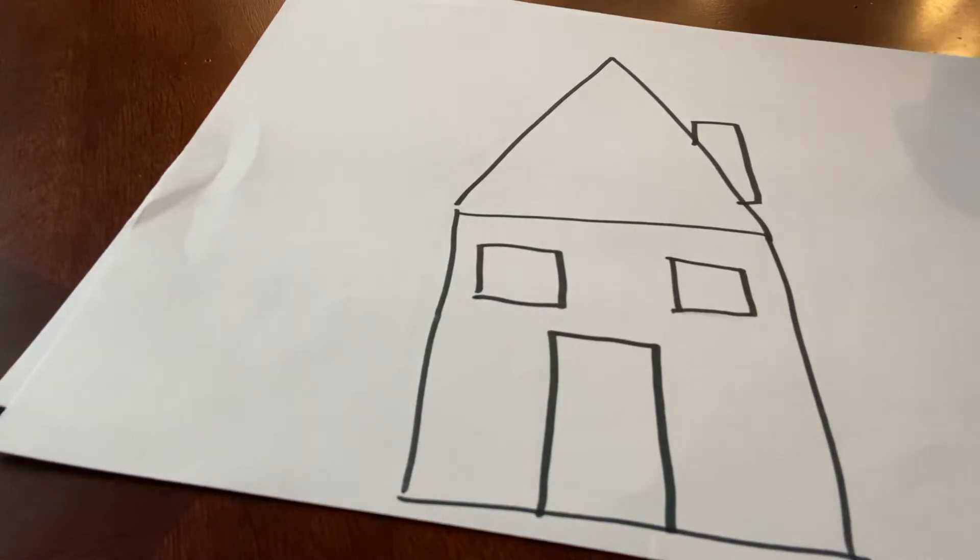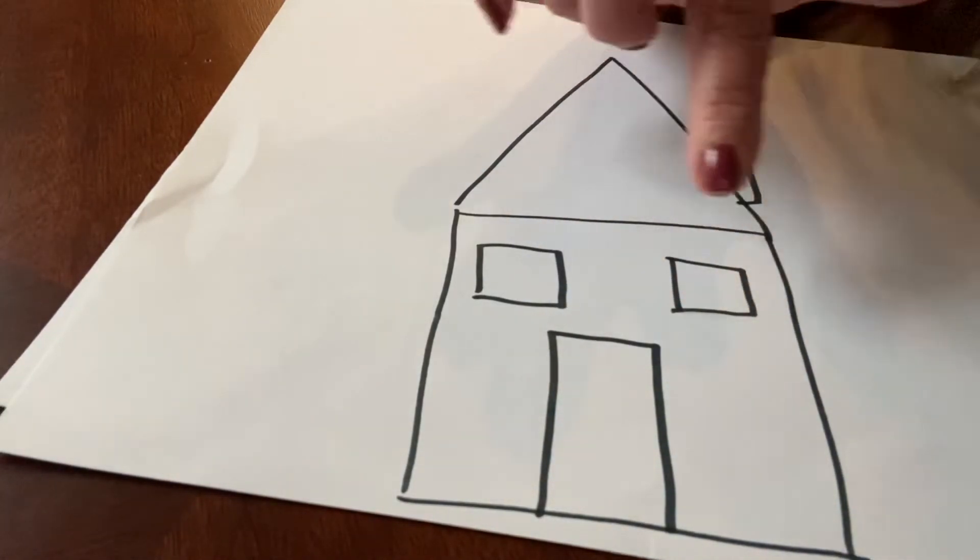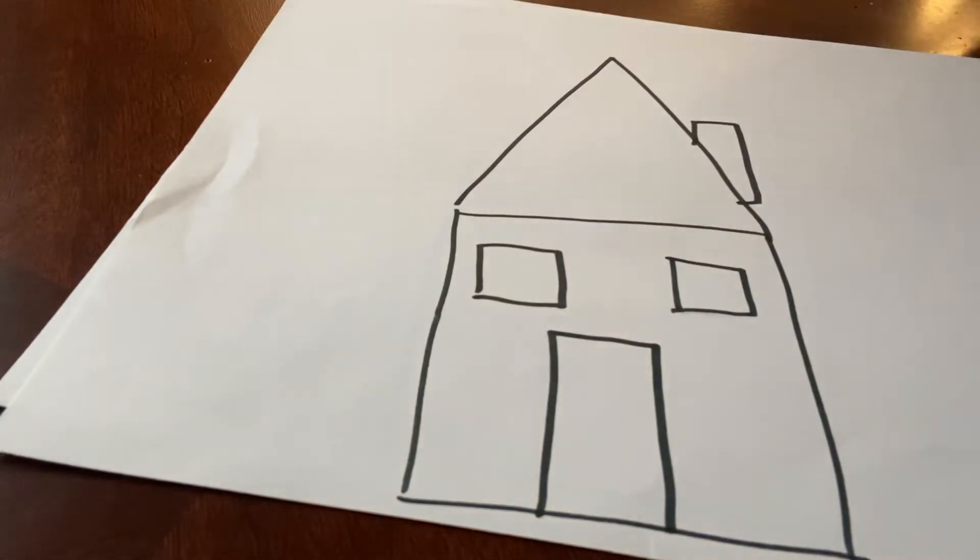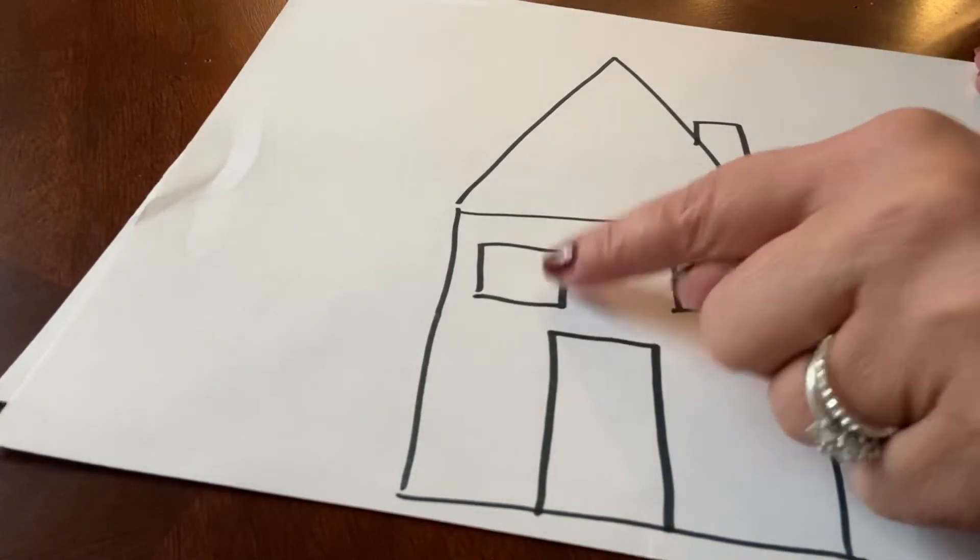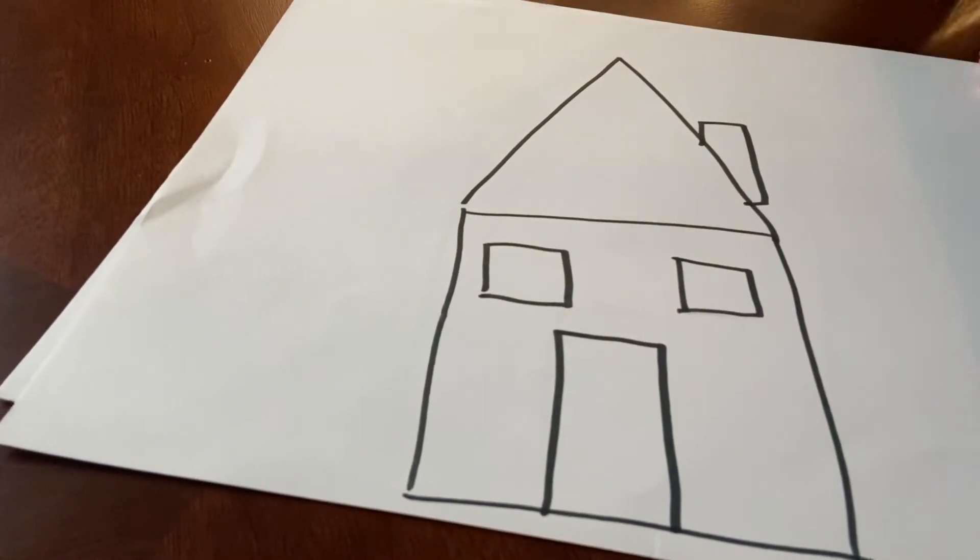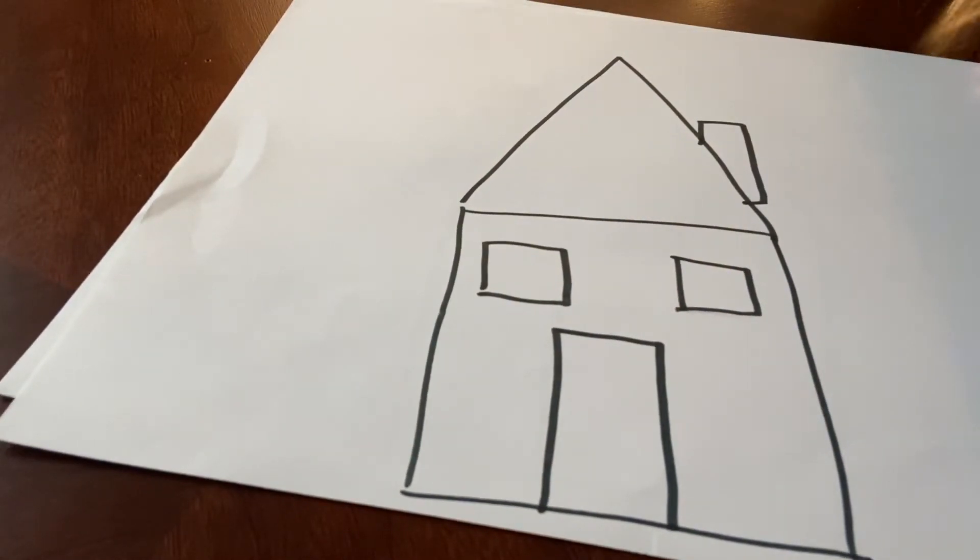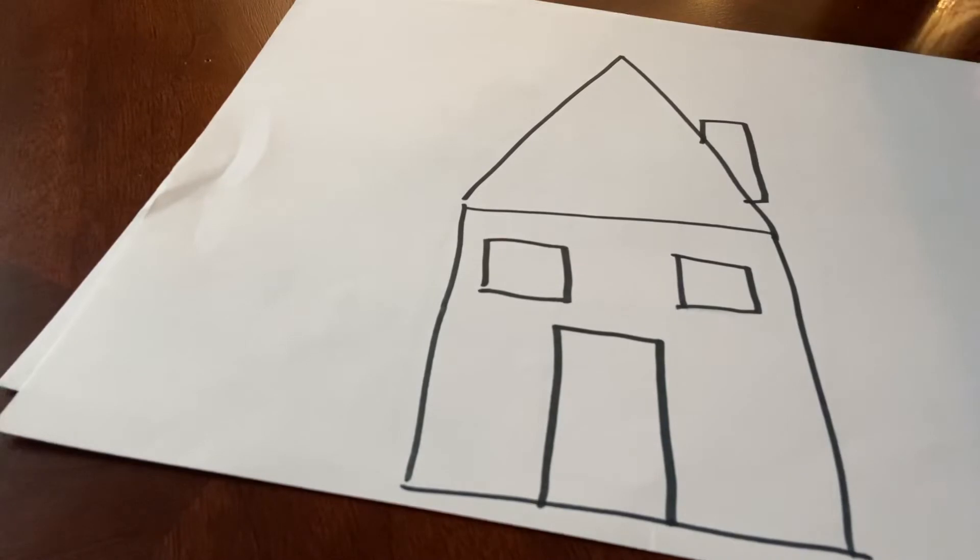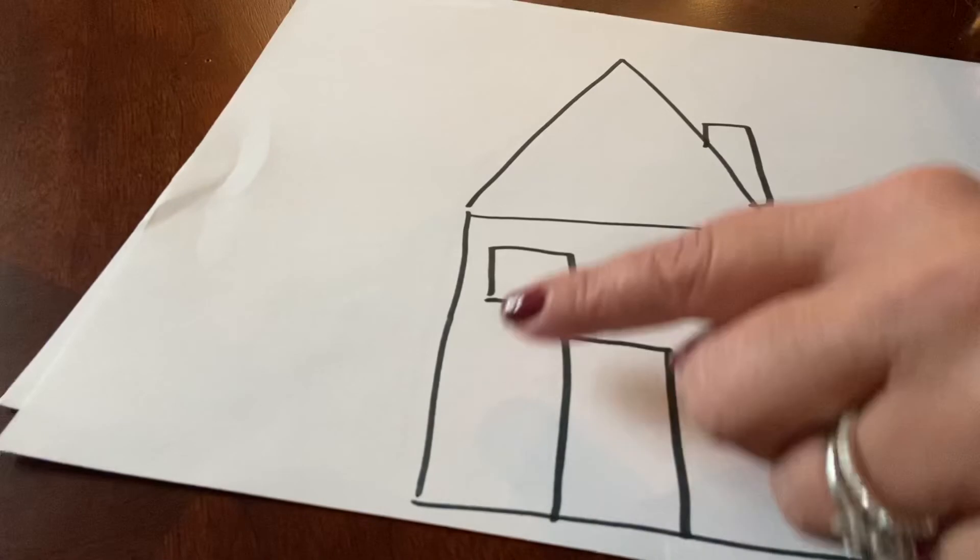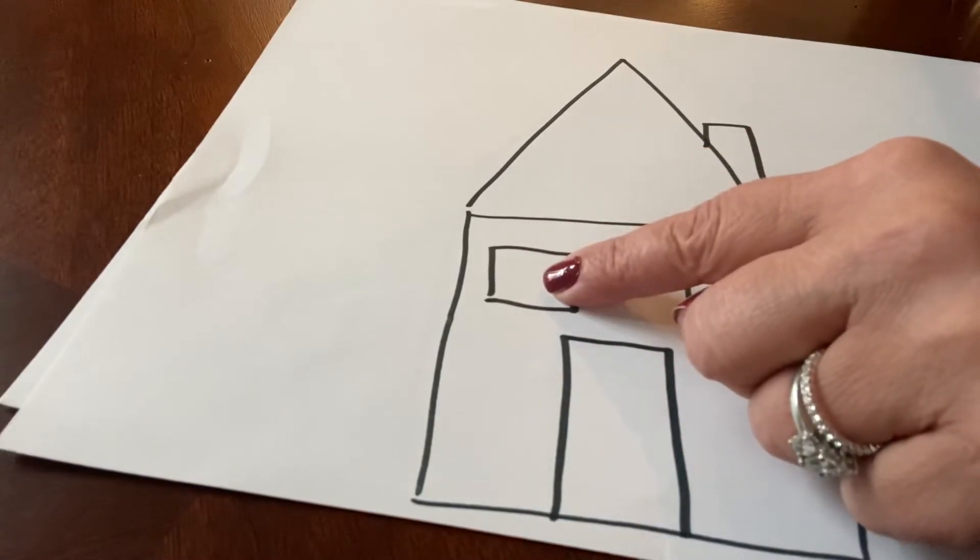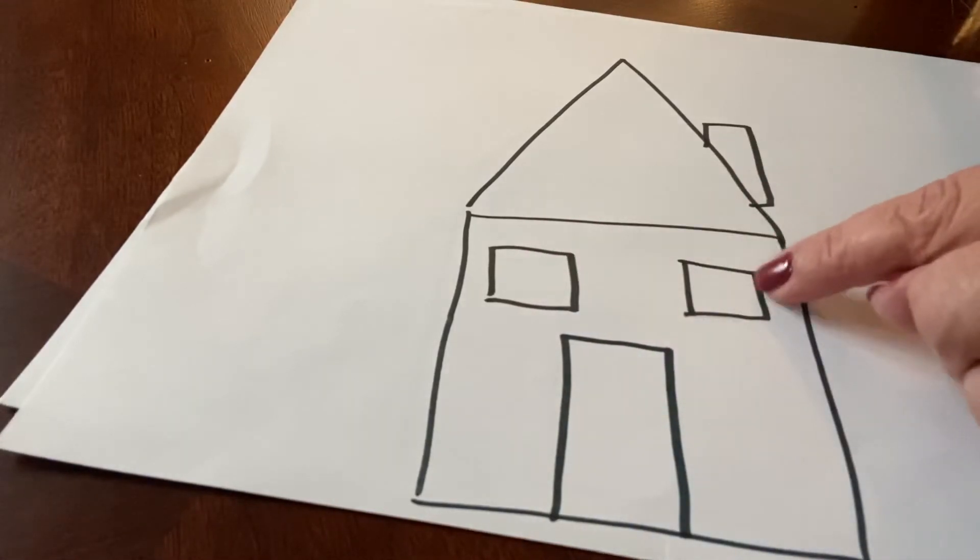We're going to see our next shape. What is this? Those are the windows. I made one, two. Two more squares. So we have how many squares? Let's see. One is the base of the house, two is a window, and three is another window.